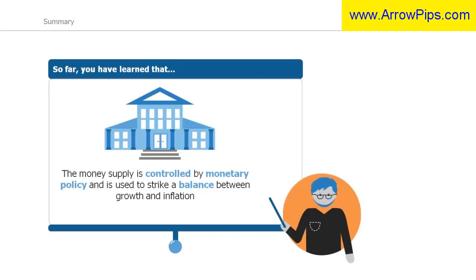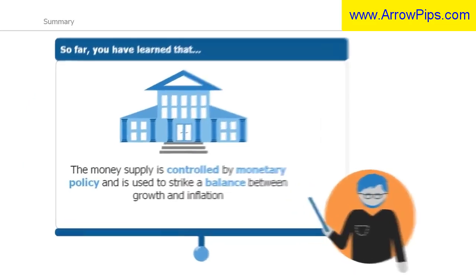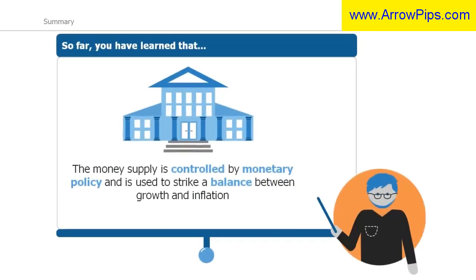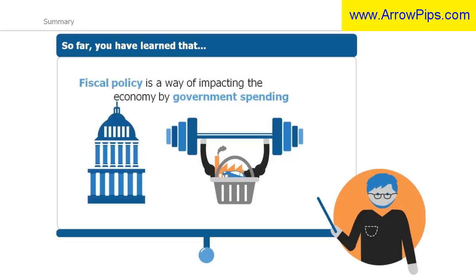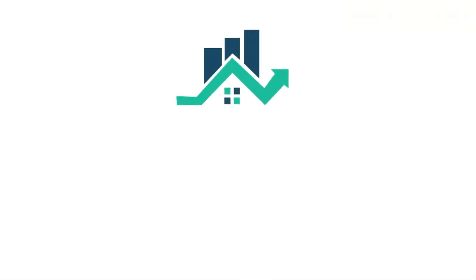So far, you have learned that the money supply is controlled by monetary policy, and it is used to strike a balance between growth and inflation, and that fiscal policy is a way of impacting the economy by government spending.